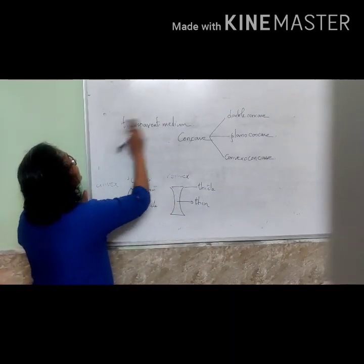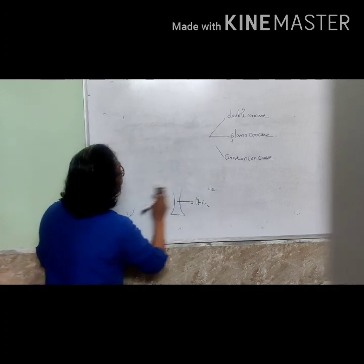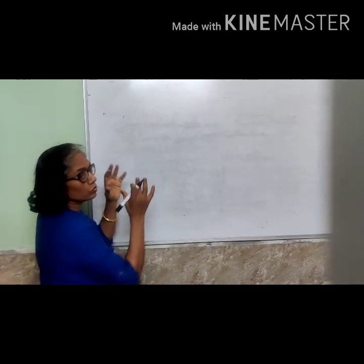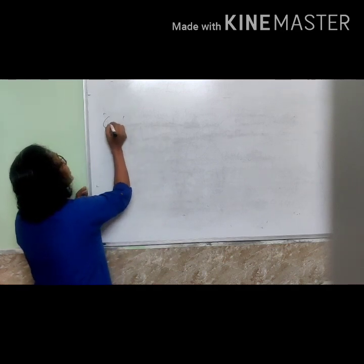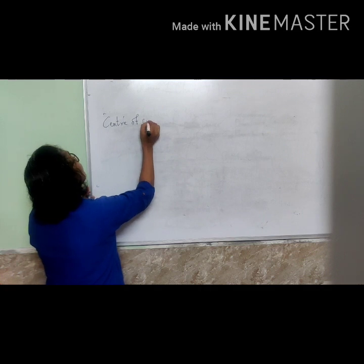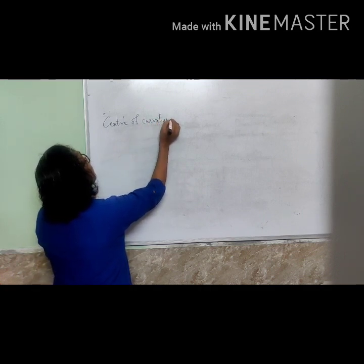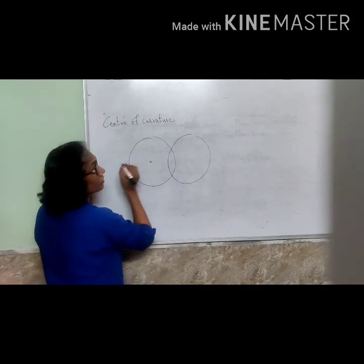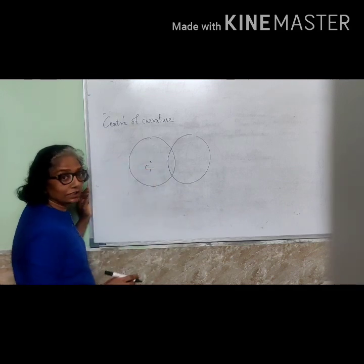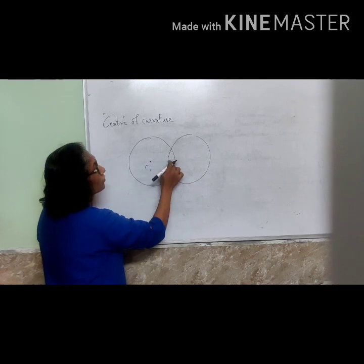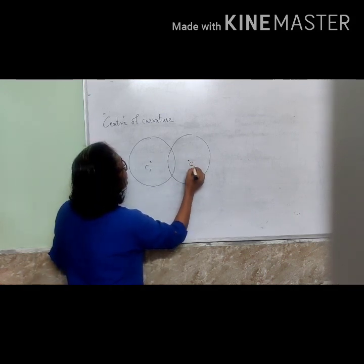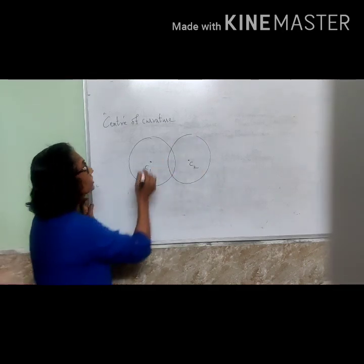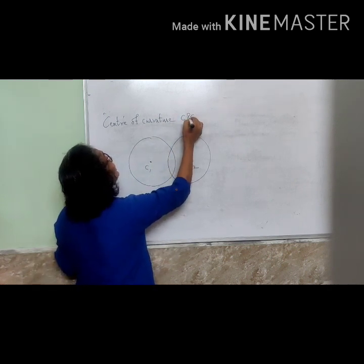Coming to the concepts regarding each lens. The very first one: the lens is made of two spheres. So what is the center of curvature of a lens? These are the centers of the spheres of which the lens is a part. For the first sphere, C1 is the center. C2 is the center of the next sphere. So C1 and C2 are the centers of curvature.